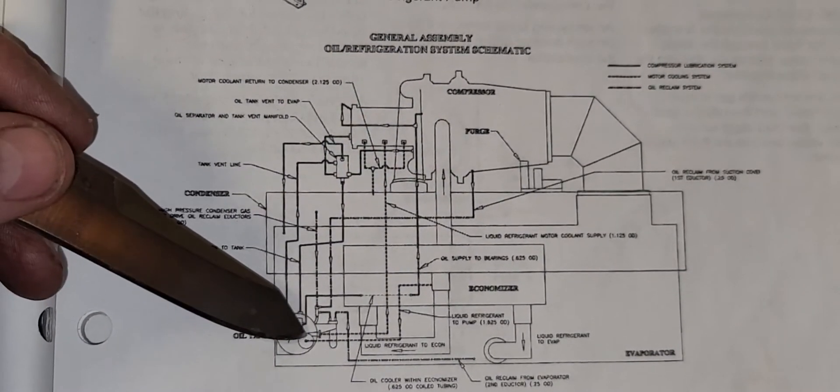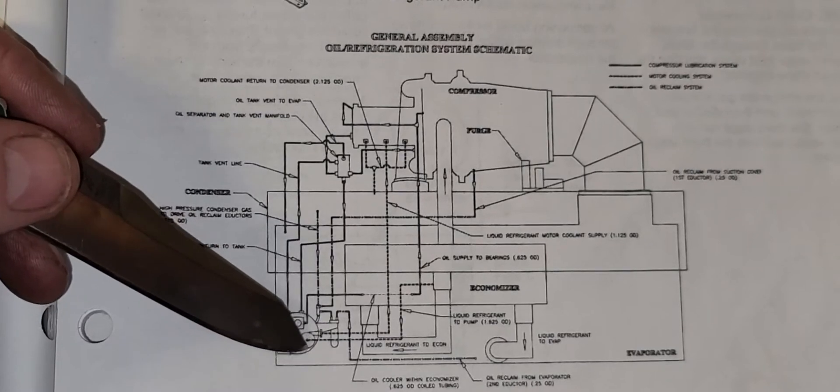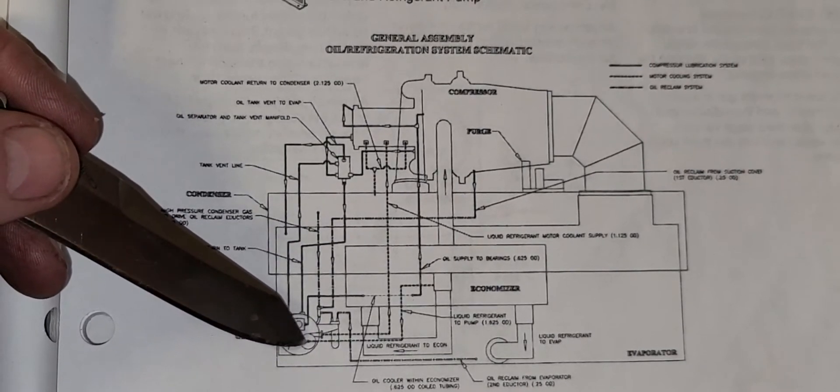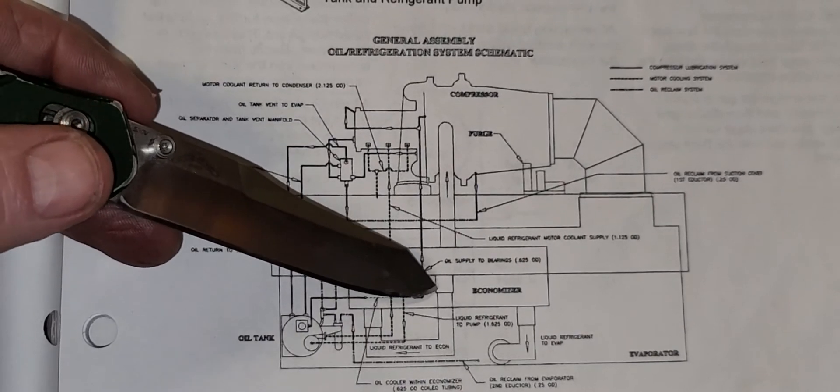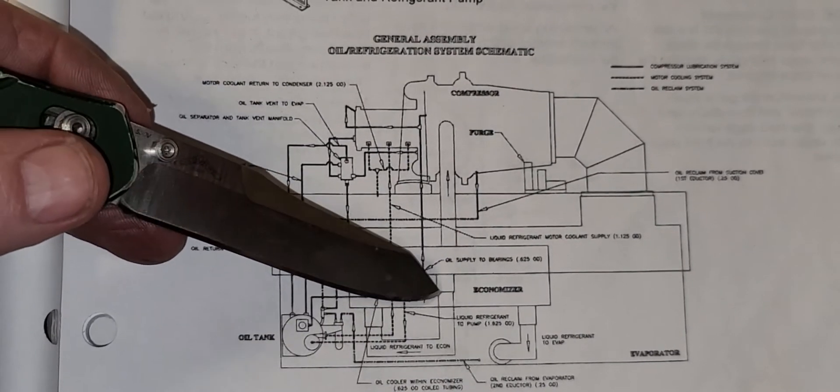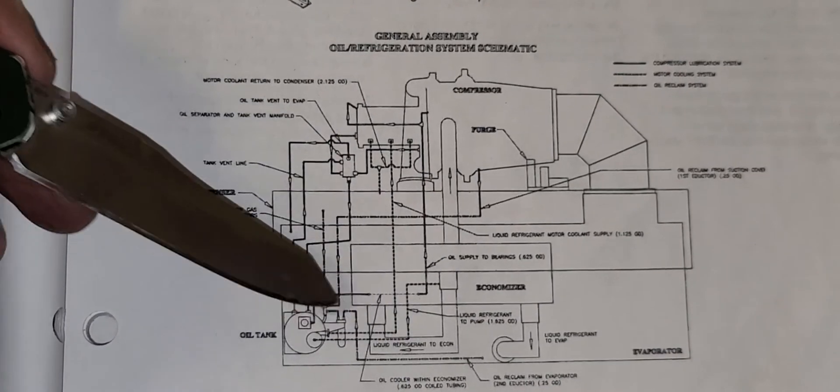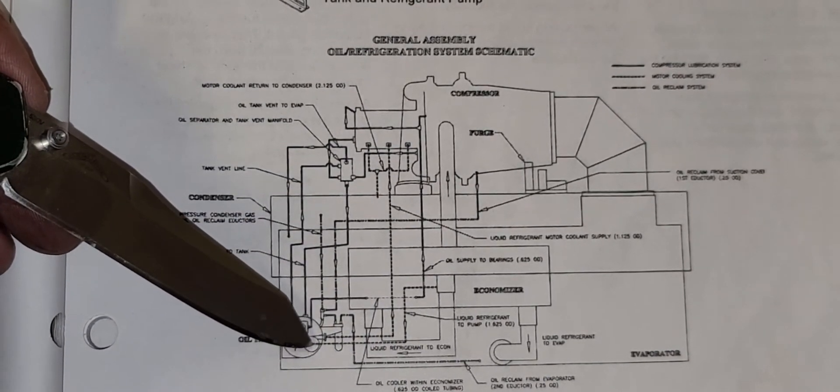Now the centrifugal pump that's on the front here draws liquid or receives liquid from the bottom of the condenser. So this pressure is higher than the eye of the impeller.